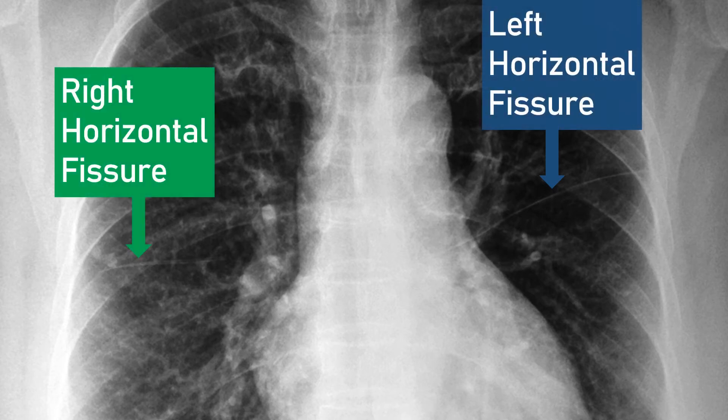On frontal radiographs, this accessory fissure resembles the right horizontal fissure, except that it may be higher or lower. Like the right horizontal fissure, it can become clearly visible on plain film by airspace opacification or pleural effusion.